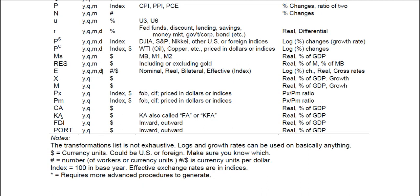Within the capital or financial account, there's foreign direct investment and portfolio investment. FDI is long-term, stable ownership of a firm — greater than 10% ownership — and portfolio investment is less than 10% ownership, which involves more unstable financial transactions. These are usually in dollars, yearly or quarterly. Inward would be liabilities and outward would be assets, and these are used when talking about capital flows.